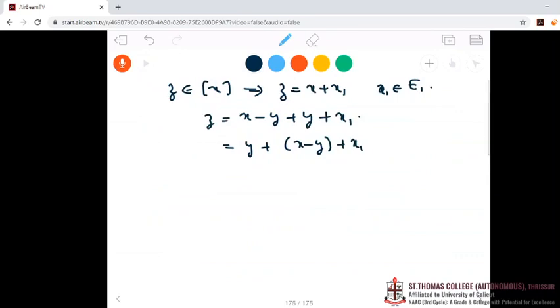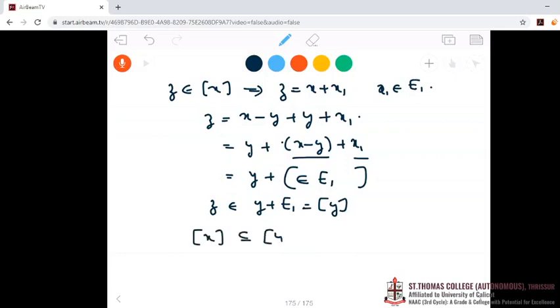Now we have already proved that X minus Y is in E1. So this is in E1. X1 is in E1. So their sum is in E1. So I can express Z as Y plus some element of E1. So class X is a subset of class Y.